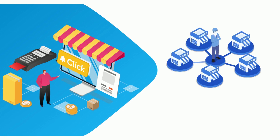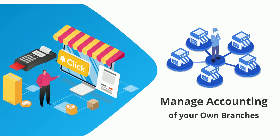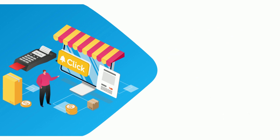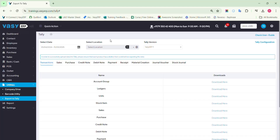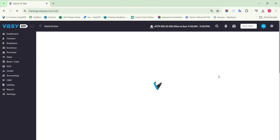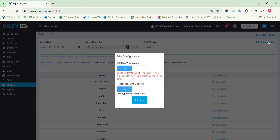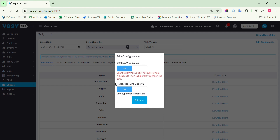The merchant should note that as a company owner, you are entitled to manage the accounting of your own branches. However, the franchise will be responsible for the accounting of their own store. Once the setup is completed, you need to activate the setting in Waze ERP. Open the export to Tally function in ERP and go to Tally Configuration. Mark the 'Transaction with go-down' setting as yes and close the pop-up.